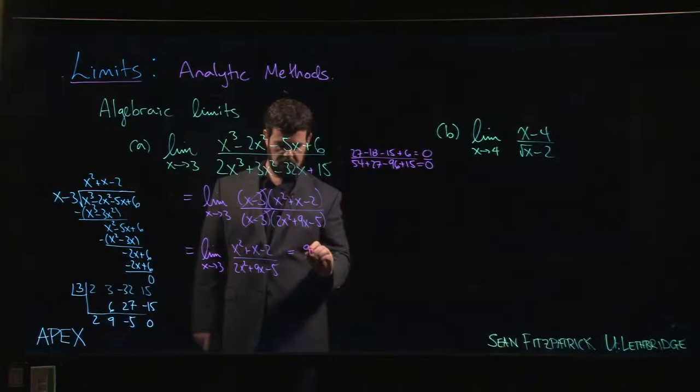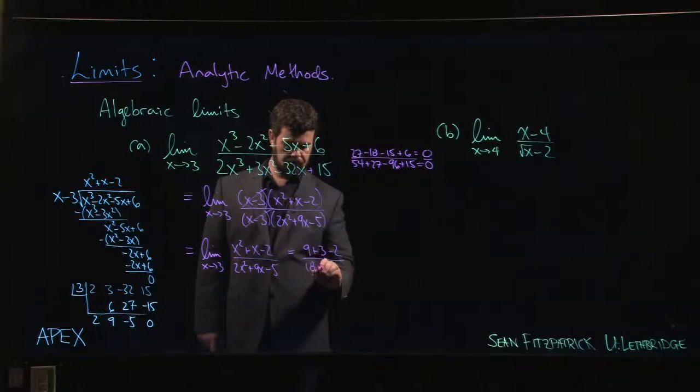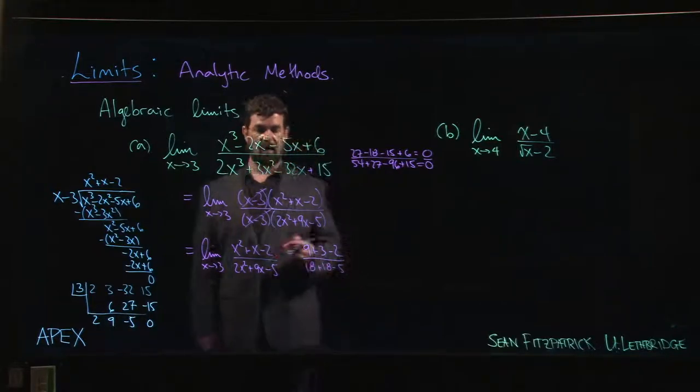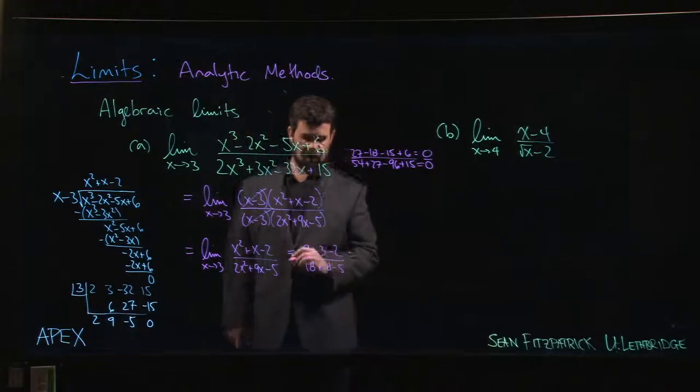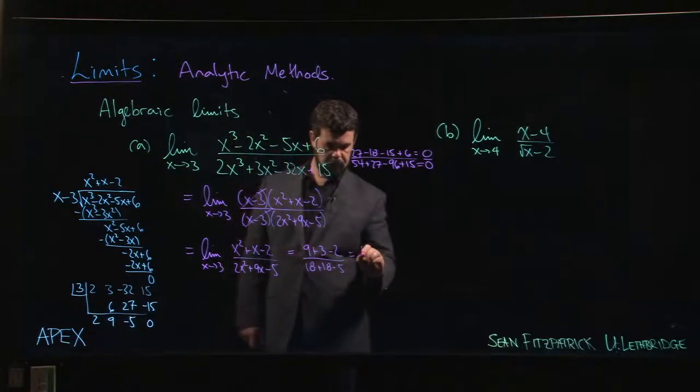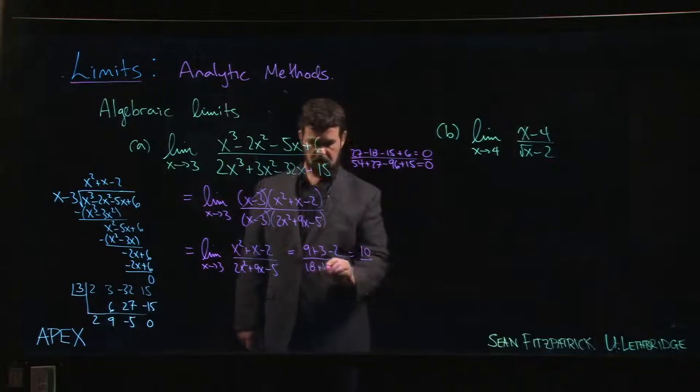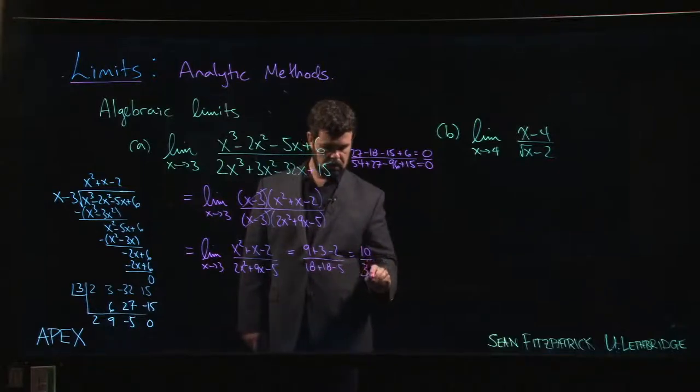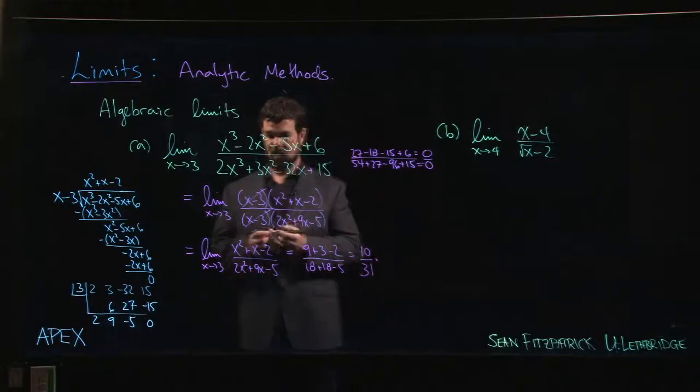3 squared is 9, plus 3 minus 2, 18 plus 18 minus 5. Simplify a little if you want. 10 over 31, and that's your answer.